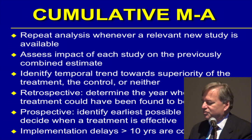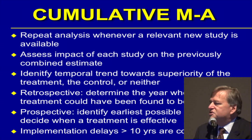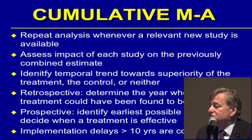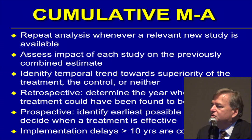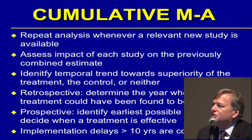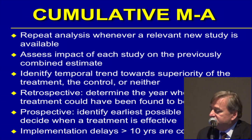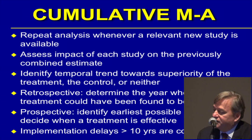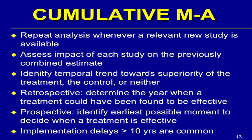Speaking of cumulative effects, I wanted to conclude with my last couple of slides. If opioid sparing has been on one agenda or another for at least 50 years, why isn't that the default? There is a subcategory of meta-analysis called cumulative meta-analysis, invented by my colleague Joseph Lau. Basically, you repeat the analysis of the effect as each new relevant study becomes available, assessing the incremental impact of each study on the previous estimate. You can identify a trend towards superiority of active treatment, control, or neither — and retrospectively identify in which year a treatment could have been found effective.